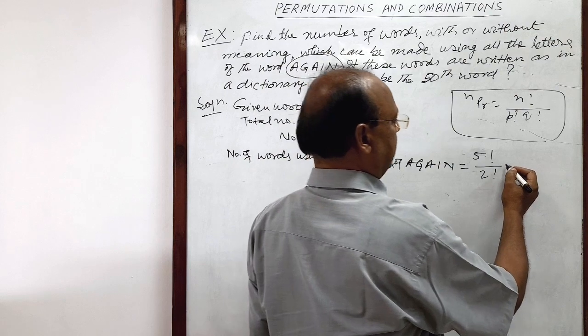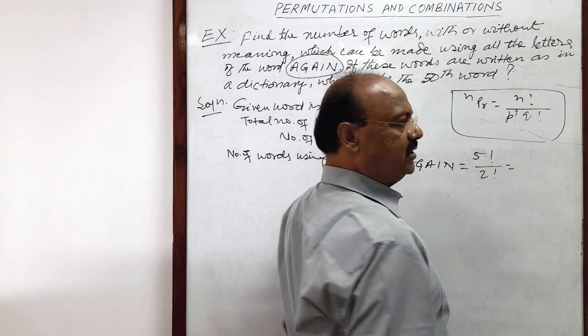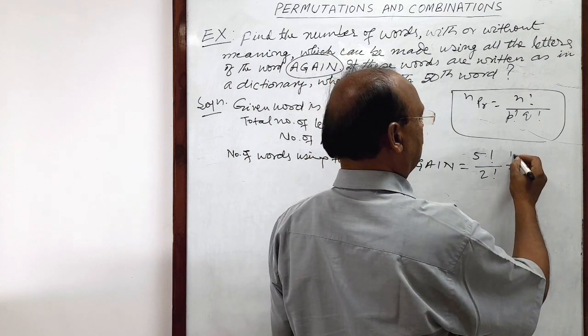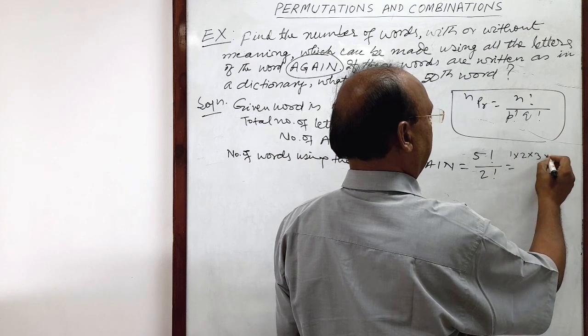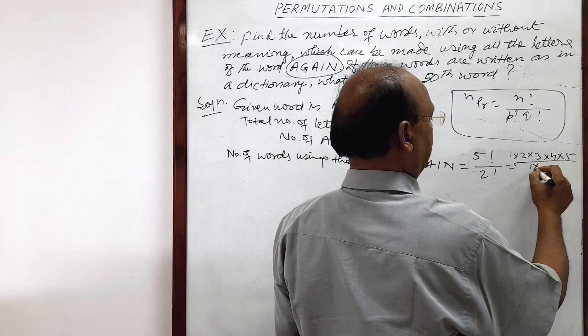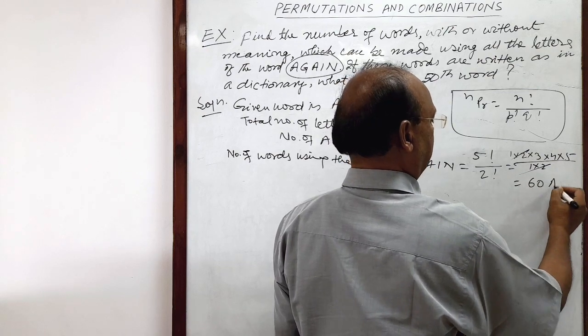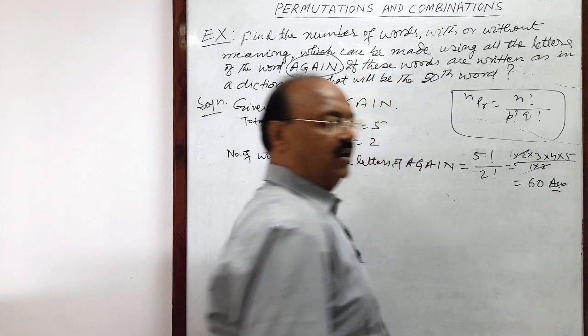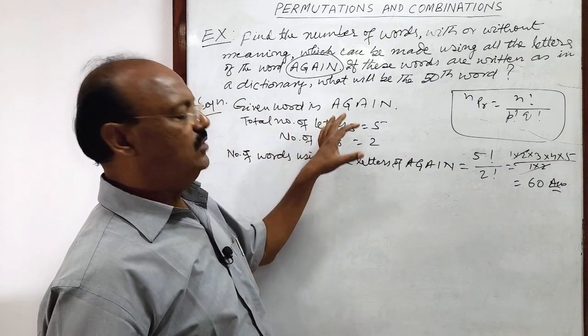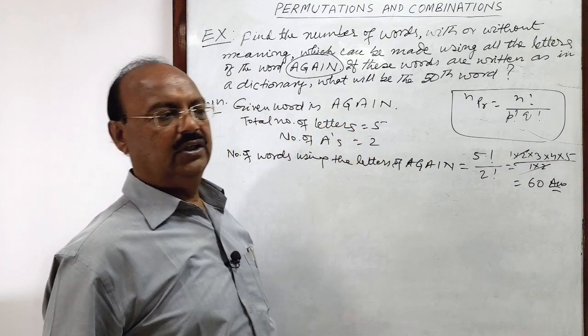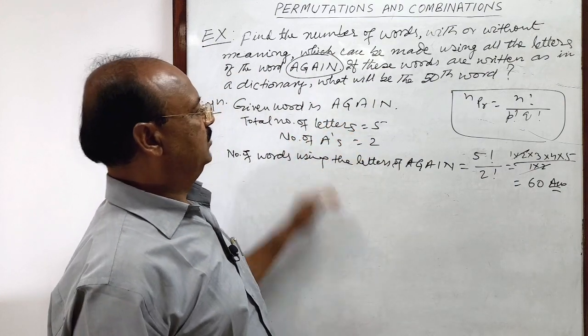Let us find it out. This value will be 60 because this is 1 into 2 into 3 into 4 into 5 and this is 1 into 2. This is cancelled out and this is equal to 60. This is the answer. It means 60 words can be formed with or without meaning with the help of the letters again.